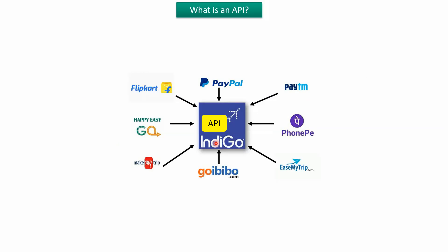We will see a real-time example of how API is used. Suppose you want to book a flight from Indigo. You can book an Indigo flight not only from the Indigo official website, but also from Paytm, PhonePe, Paypal, MakeMyTrip, GoIBEO, etc. This is possible because of APIs.